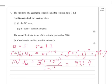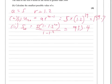OK, the sum of the first n terms of the series is greater than 3,000, calculate the smallest value of n. We often see this sort of question, so let's write down what we're told there,